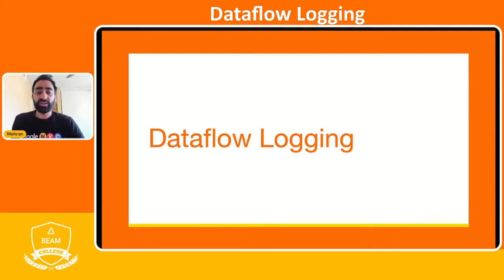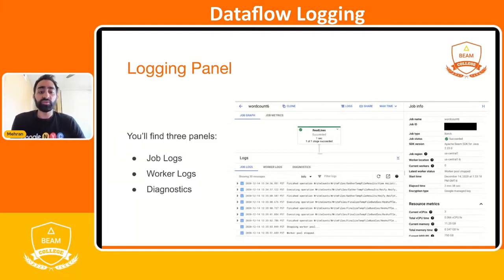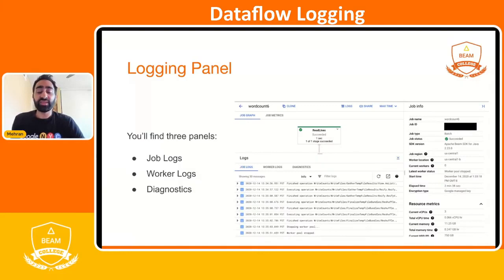First, let's talk about Dataflow logging. You'll find the Dataflow logging panel at the bottom of your job details page. You'll see a little arrow that you click on that expands the logging panel. When you see the logging panel, you'll see three different panels: one for job logs, worker logs, and a diagnostics tab.